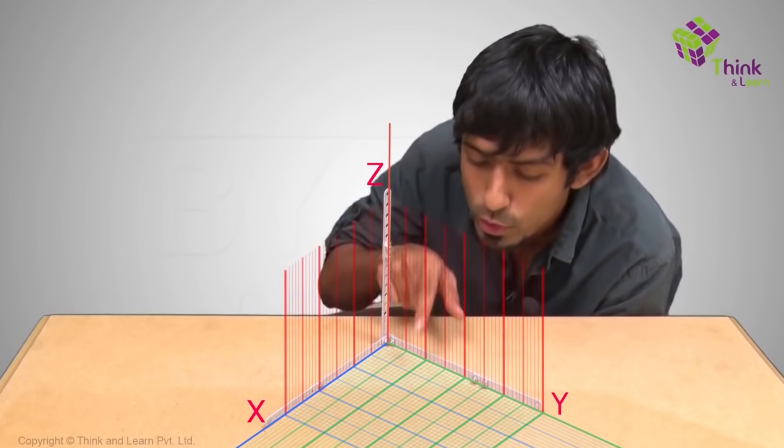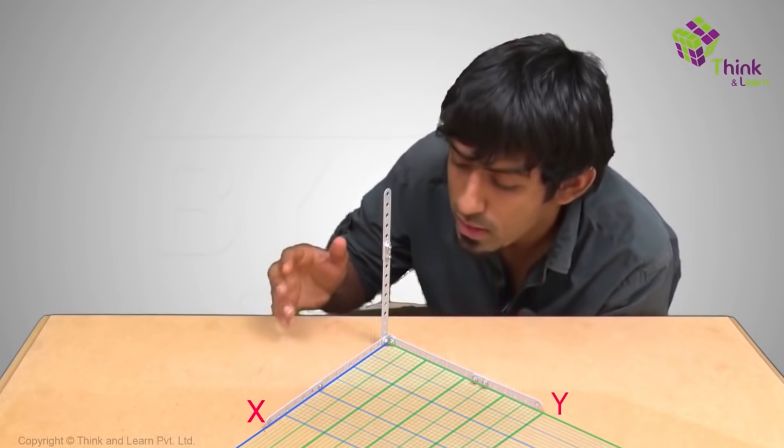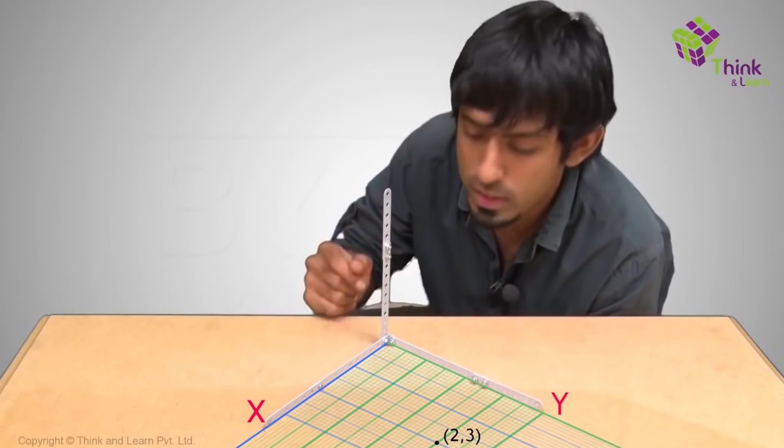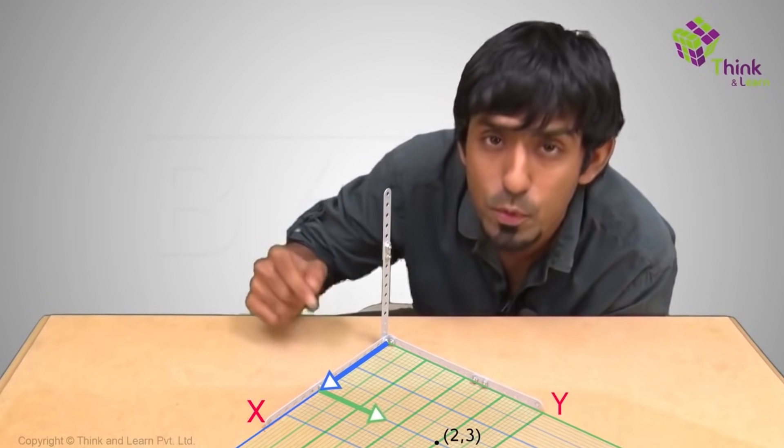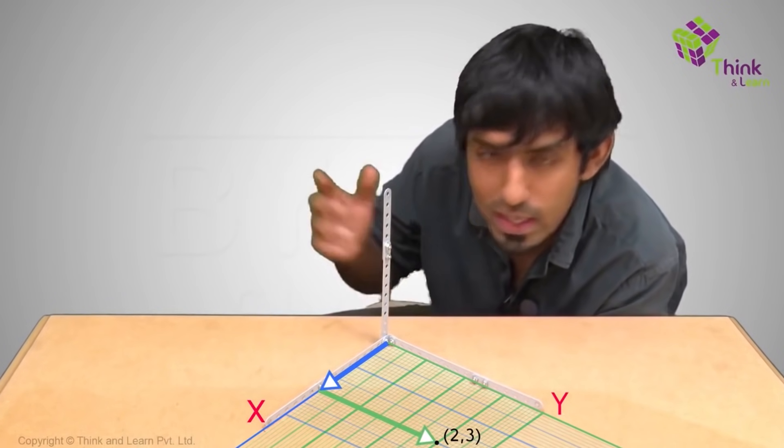So let's say I refer to a point on this plane itself, x, y, let it be 2, 3. So if I know the point 2, 3, I know I have to walk two steps in the direction of the positive x-axis and then three more in the direction of my y and I'll reach my point.